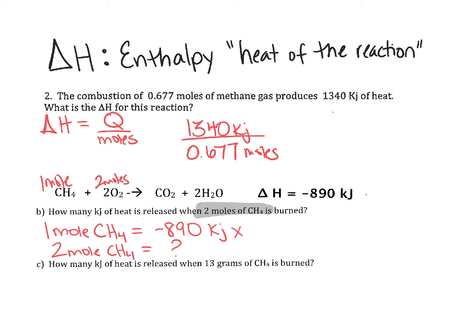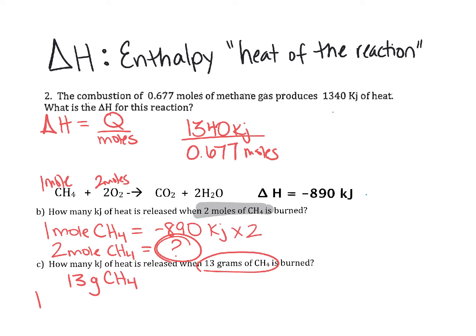If we multiply by two, that tells us how much energy two moles will make. For letter C, we're given grams. We have to remember the balanced reaction only tells us the relationship between moles and energy. So if given grams, the first step is to convert to moles using the molar mass from the periodic table.